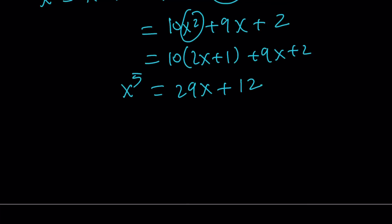And what are we looking for? We are looking for x^5 - 29x. So replace x^5 with 29x + 12, and then minus 29x, they cancel out and you end up with 12 as before.